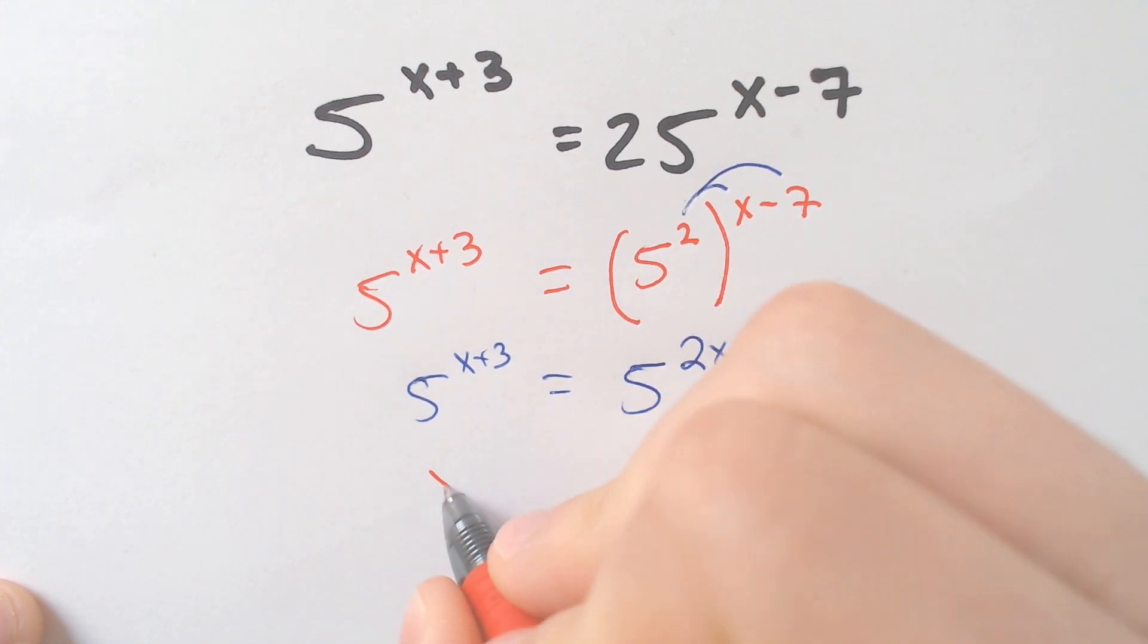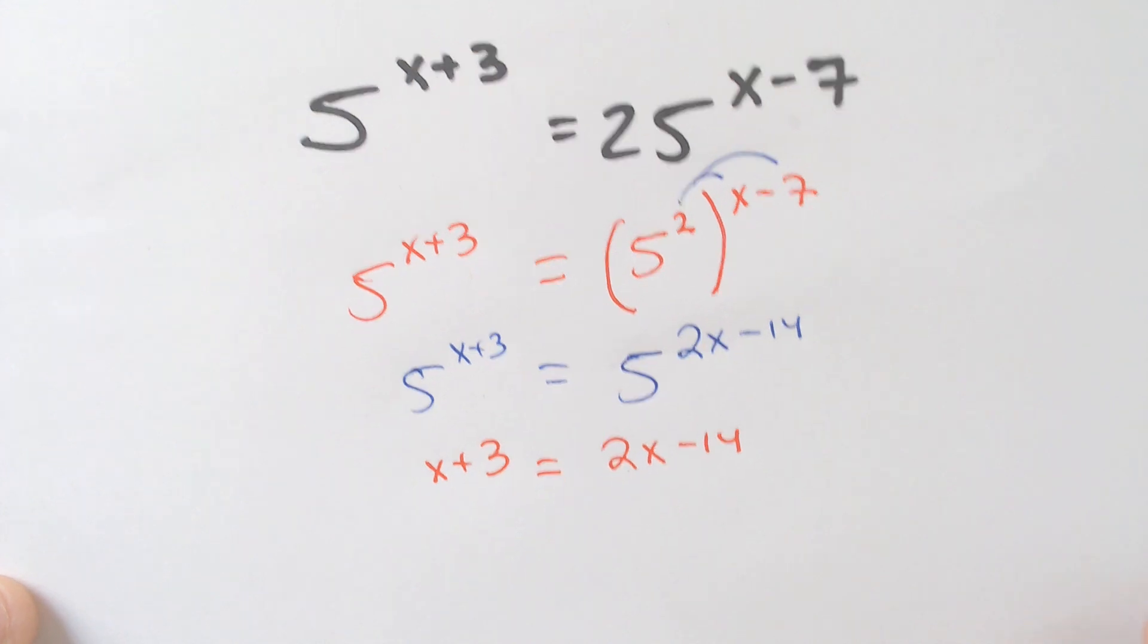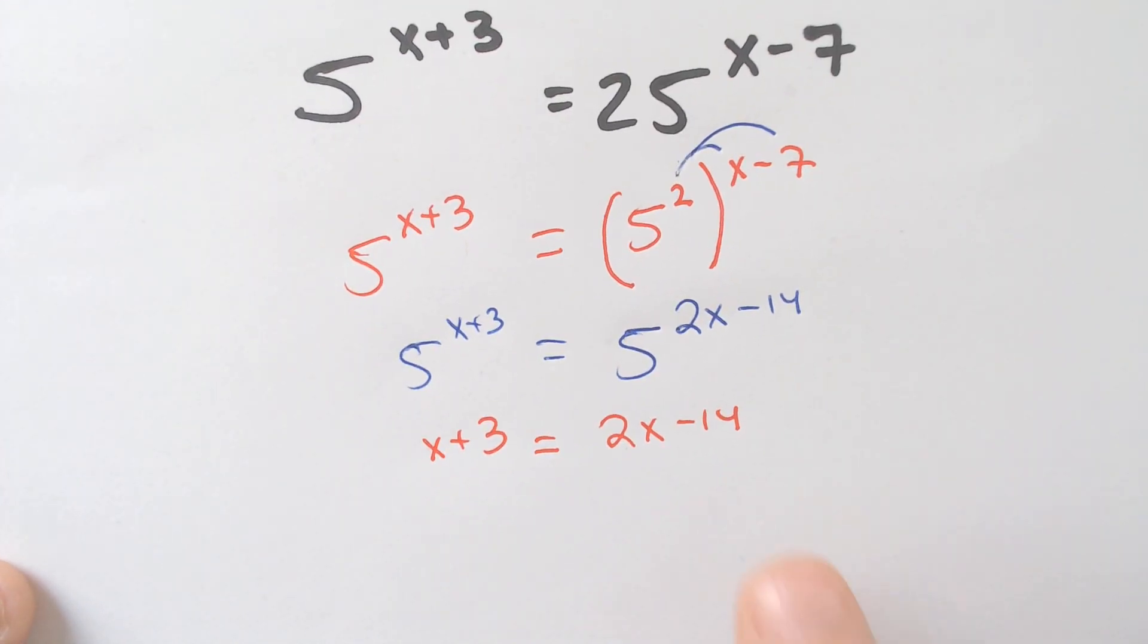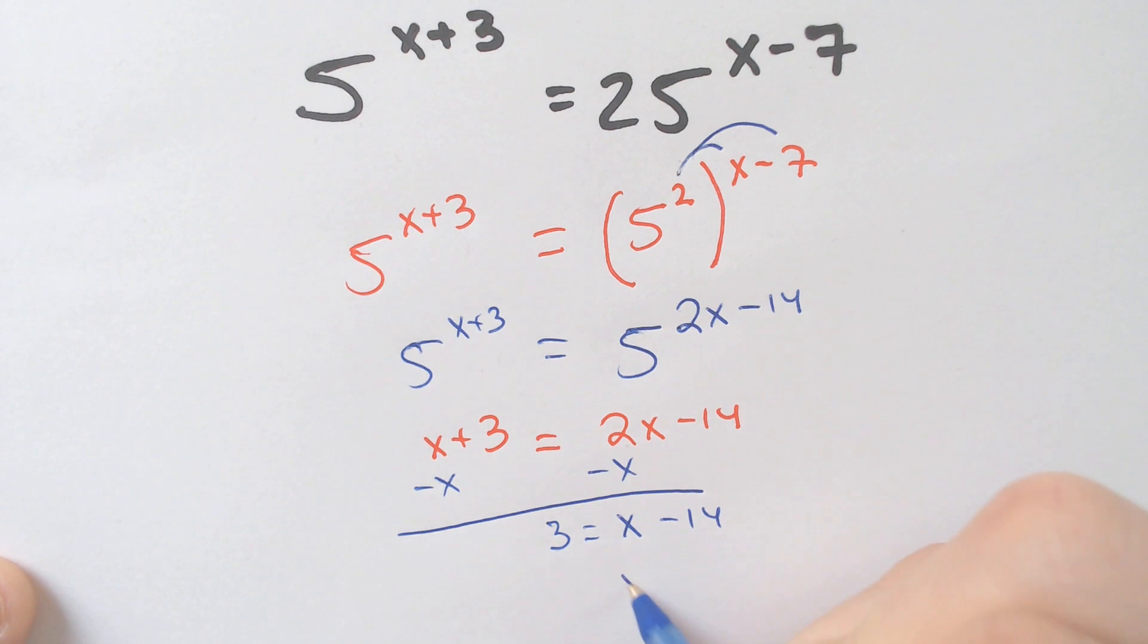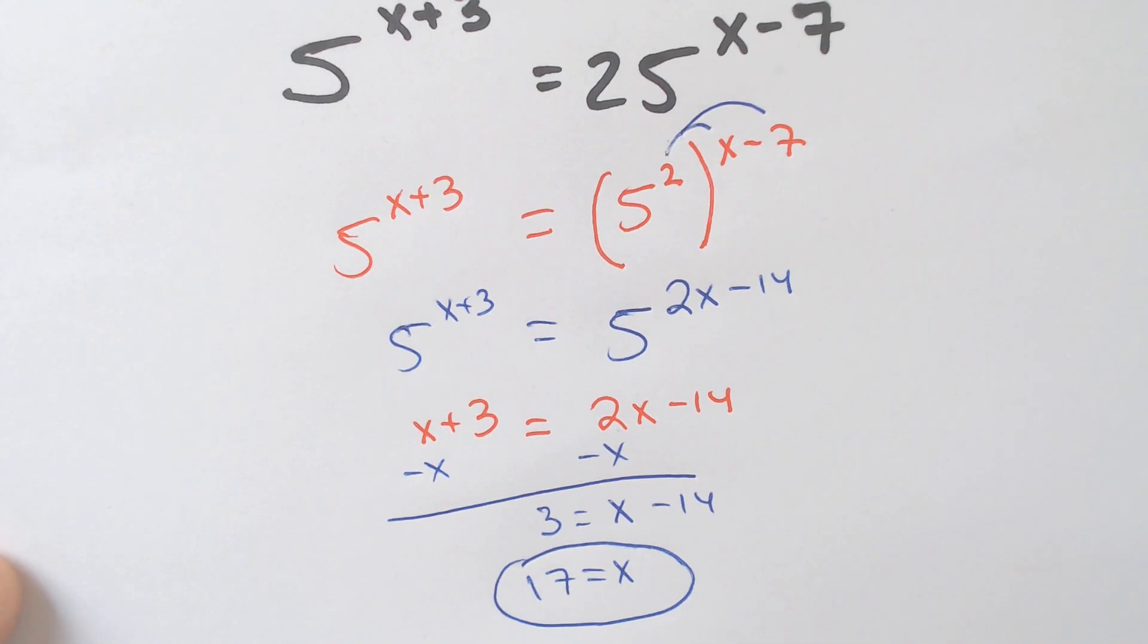So at this point, you can just set x plus 3 equal to 2x minus 14 and continue to solve the problem. We're going to subtract x from both sides, and you get x minus 14 is equal to 3, and then add 14. And when we add 14 to 3, you get 17 as our final answer for that one.